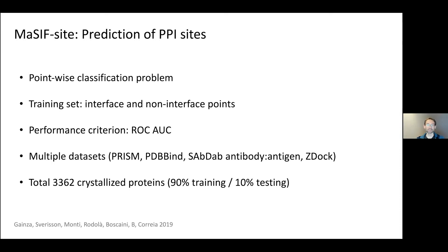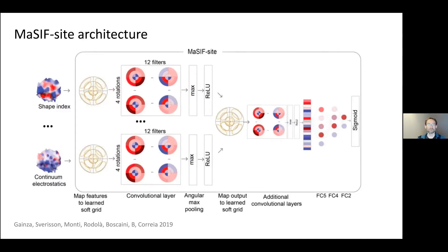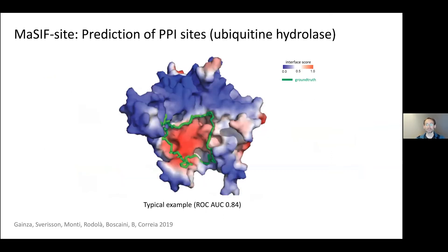The first task is interface site prediction — a pointwise binary classification problem. We use a training set containing examples of interface and non-interface points collected from public domain datasets such as PRISM, using slightly more than 3,000 crystallized structures with a 90/10 train/test split. Performance is measured by area under the ROC curve. We feed geometric and chemical features into the geometric convolutional network and produce a classification of whether a point belongs to an interface site or not.